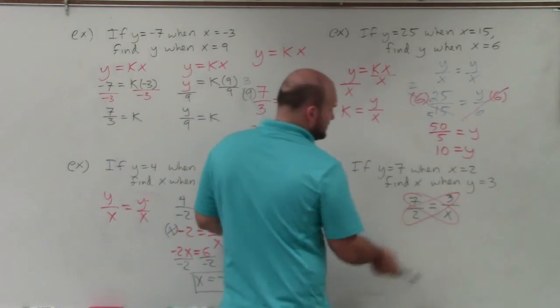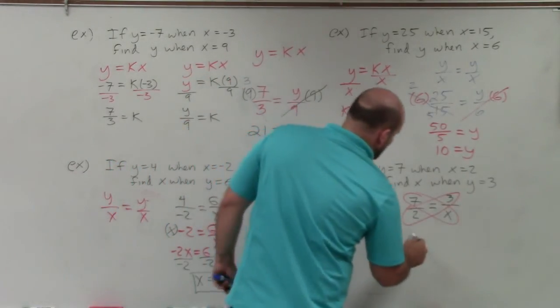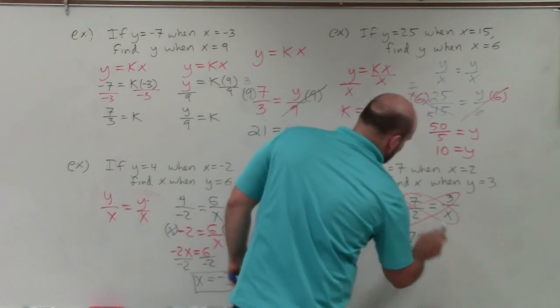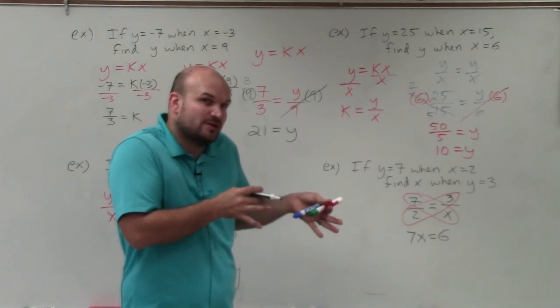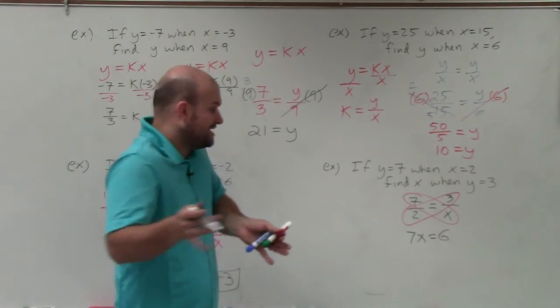Circle the cross products - you're going to multiply 2 times 3 and 7 times x. So you have 7 times x equals 2 times 3, which is 6. Just make sure you have one product on one side of the equation and the other product on the other side of the equation.